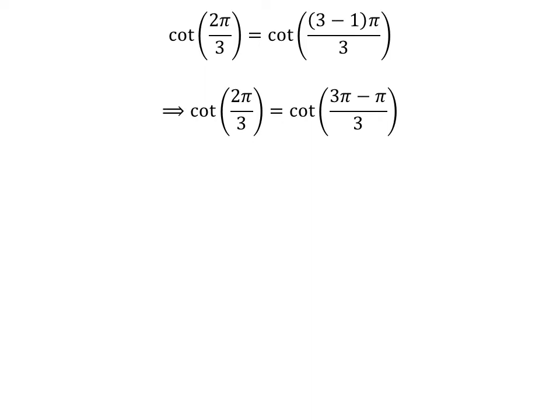Expanding the numerator, we get cotangent of 2 times pi upon 3 is equal to cotangent of 3 times pi minus pi upon 3. The fraction 2 times pi upon 3 can be expressed as difference of two fractions 3 times pi upon 3 and pi upon 3.